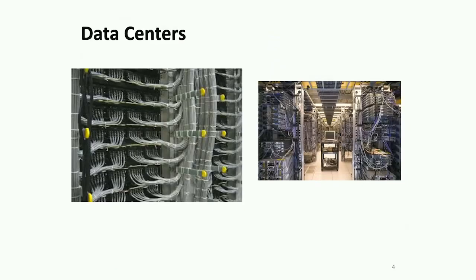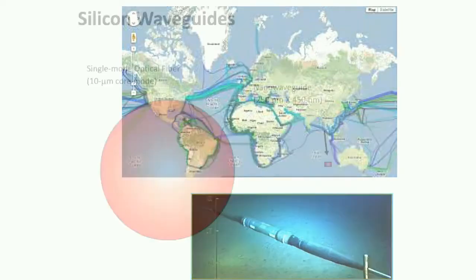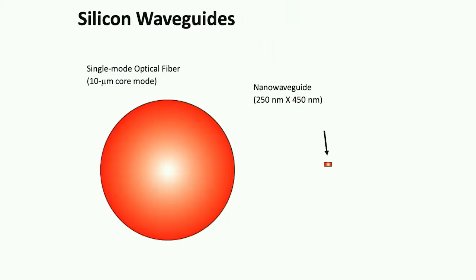That basically enabled the miniaturization of optics — not just for the future of AI or data centers, but for any applications related to optics. That's why I mentioned, for example, the display, vision, or microscope for medical devices. All of those are now based on miniaturized optical components on a chip scale.